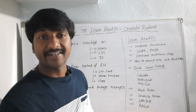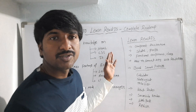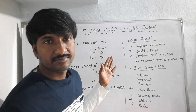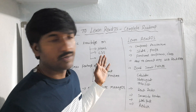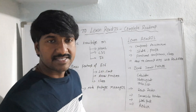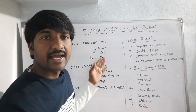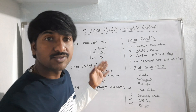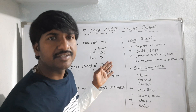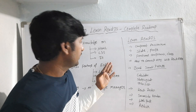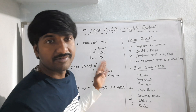HTML is used to structure web applications — it's like the skeleton of the human body. CSS, which stands for Cascading Style Sheet, is used to design and give styles to the website; you can apply colors, fonts, and everything by using CSS. JavaScript is used to create dynamic web applications.